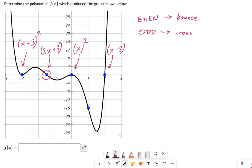And now all we have to do is we have to multiply all these things together. So here's my equation that I'm building. F of x equals, leave a little space here, x plus 3 squared, 2x plus 3, not squared, x squared, and x minus 2, not squared.